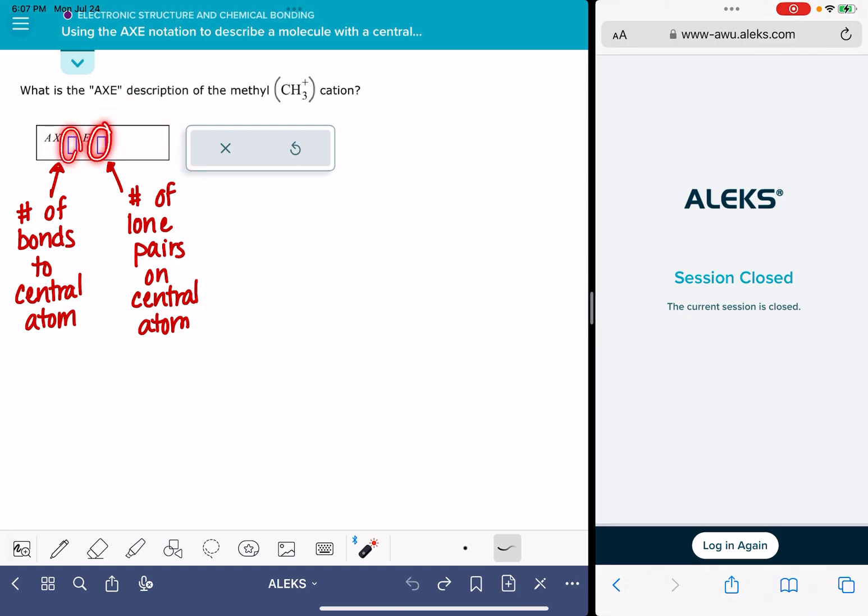In order to fill these numbers in, we need to actually be looking at the Lewis structure for the molecule. One of the things you can do to save yourself a little bit of time, instead of drawing out the Lewis structure, is to just look the Lewis structure up on the internet.